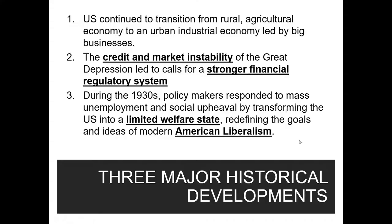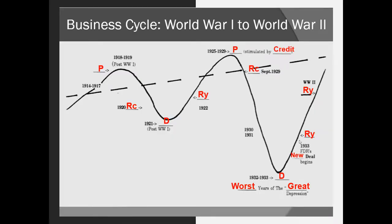One thing we want to understand about the Great Depression is that capitalism has a natural cycle of boom and bust. This trend line shows the booms or peaks and the busts or depressions — a cycle that occurs naturally in a capitalistic economy. Looking at the cycle from World War I to World War II: from 1914 to 1917, the U.S. economy is growing toward prosperity, largely because of production for WWI — war supplies, food, and goods needed by countries in Europe. Once the U.S. joins the war in 1917, that growth accelerates further, reaching an economic peak.